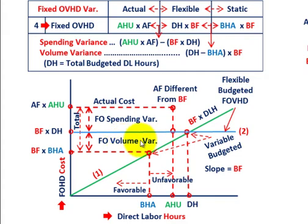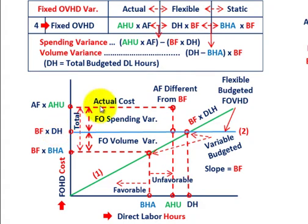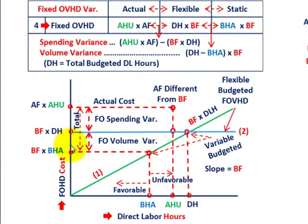Our fixed overhead volume variance looks at the budgeted hours allowed where it intersects the green line — that's the budgeted fixed rate times the budgeted hours allowed — versus our constant blue line amount. The constant amount comes off our flexible budget: denominator hours times the budgeted fixed rate. The budgeted hours allocated comes off the static amount. So that's our fixed overhead volume variance — the difference between the flexible and static amounts. The total variance is simply actual fixed rate times actual hours used versus budgeted fixed rate times budgeted hours allowed — actual versus the static amount.